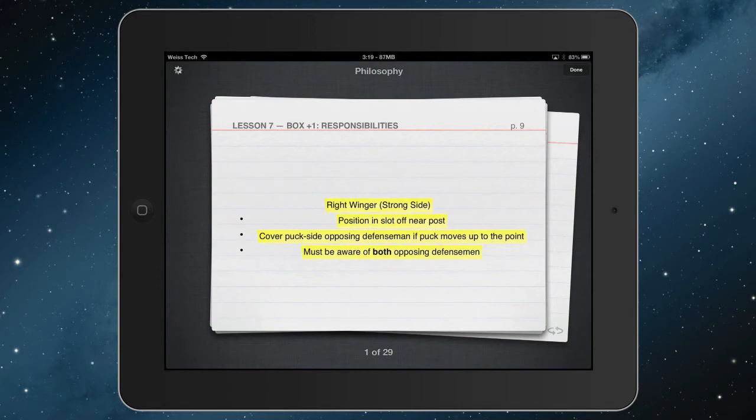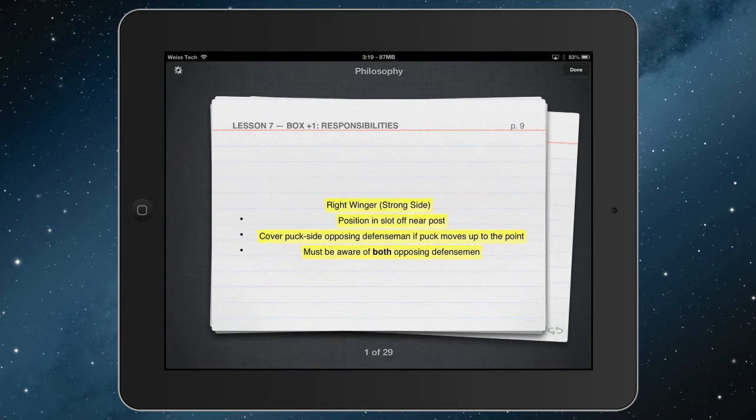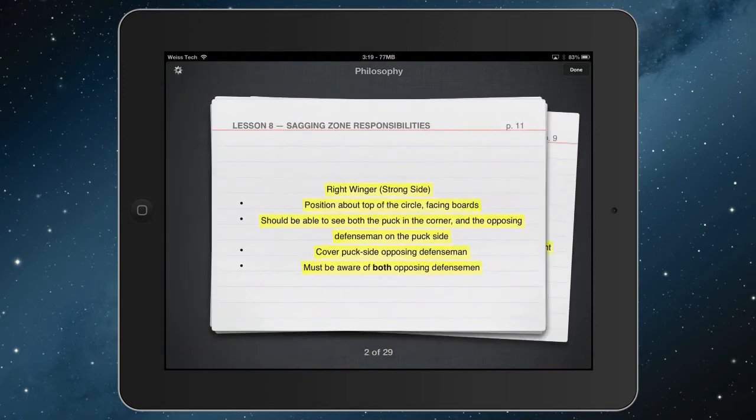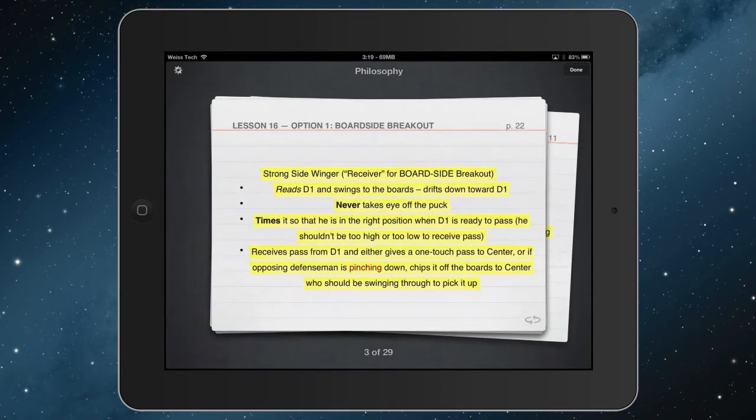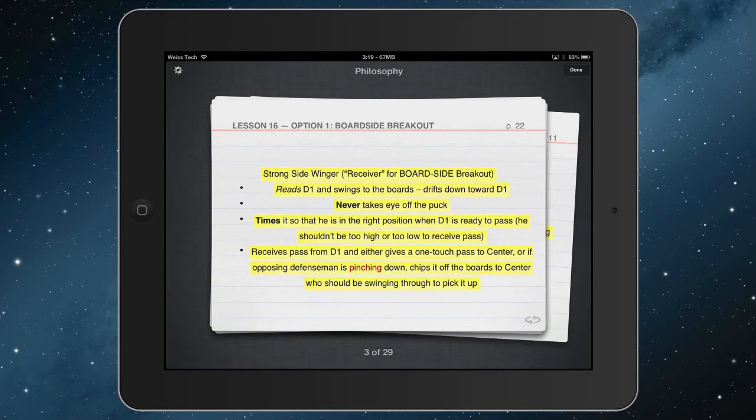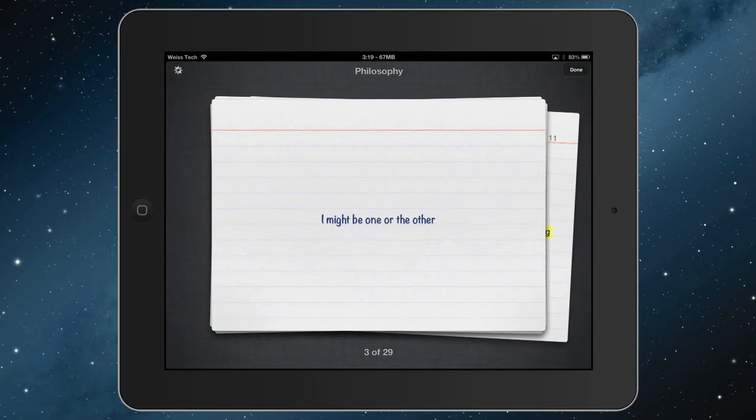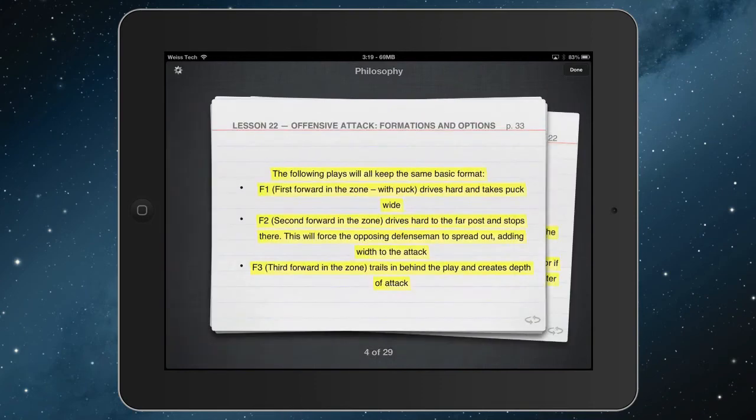So as you can see, so on this one, this was lesson seven, box plus one responsibilities. And you've got my right wing responsibilities, strong side position for the net. This is exactly what I highlighted. So you can thumb through that. You can also see, check out the other notes that I made. This is when we're talking about sagging zone responsibilities. This was our board side breakout. Now, anytime that you wrote a note in with your highlight, then all you do is click that reverse button and it flips the card over. You can see your note on the other side. So that becomes really useful as well. Here we have it again. This is the other one on the offensive attack. And I highlighted F1, F2, F3. And we were talking about the purpose of that is to drive the D deep and wide. We wanted to remember that. So there it is.